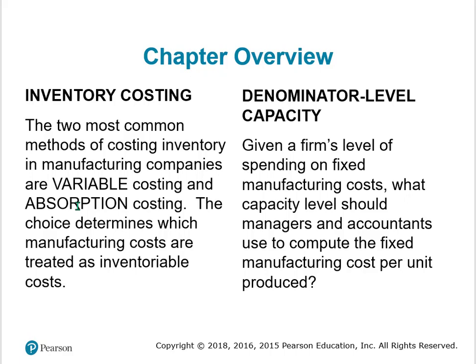The choice determines which manufacturing costs are treated as inventory and which ones end up being expensed on the income statement — that's the significant part. For capacity, given a firm's level of spending on fixed manufacturing costs, what capacity level should managers and accountants use to compute the fixed manufacturing costs per unit produced?